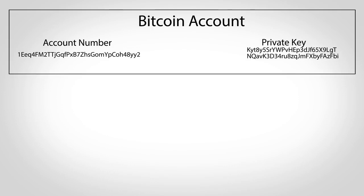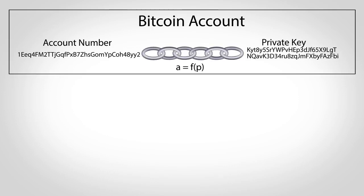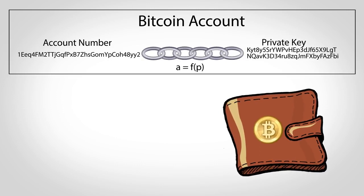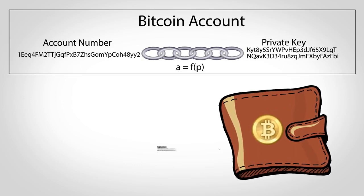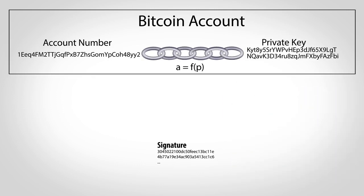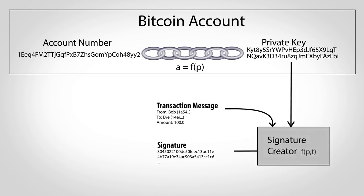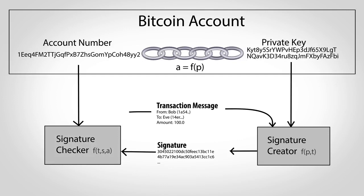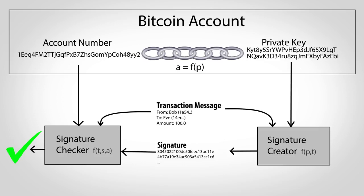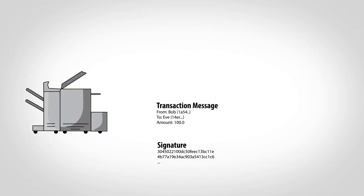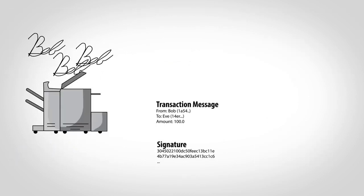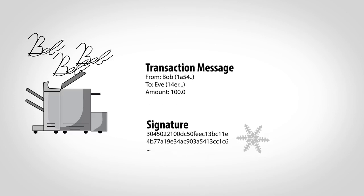When a new account number is created, it comes along with a private key mathematically linked to that account number. If you've heard of a Bitcoin wallet, these keys are what it holds, and are what allow you to create signatures. To create a signature, a private key and the text from a transaction are fed into a special cryptographic function. Another function allows other people to check the signature, making sure it was created by the account owner and that it applies to that specific transaction. Unlike the handwritten version, these signatures can't be copied and reused in the future, as they're unique to each transaction.